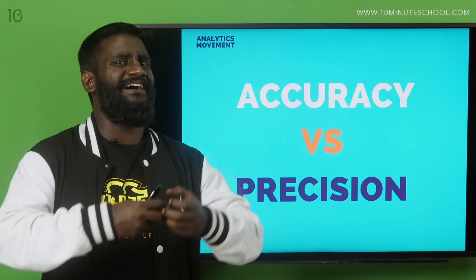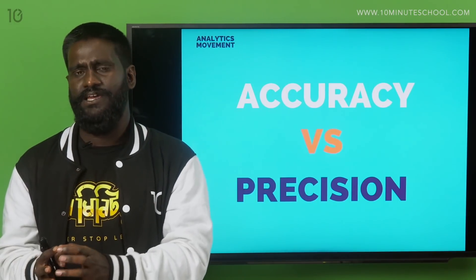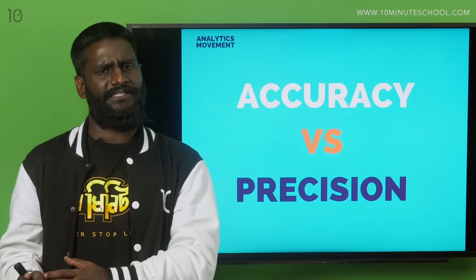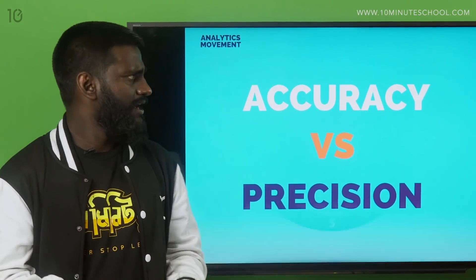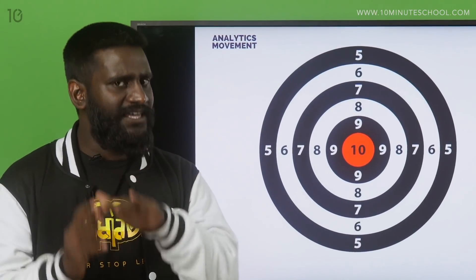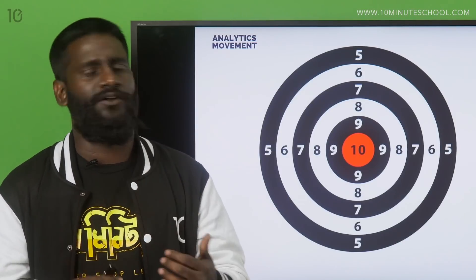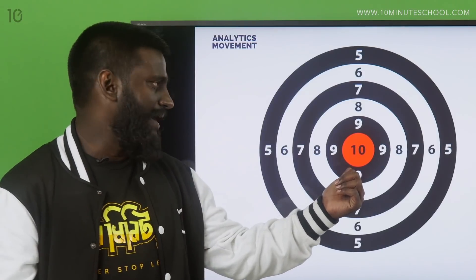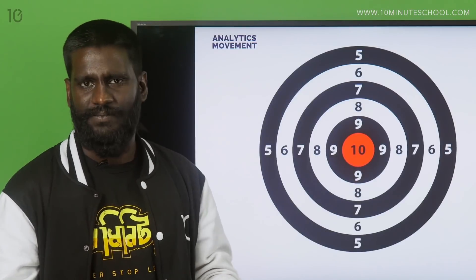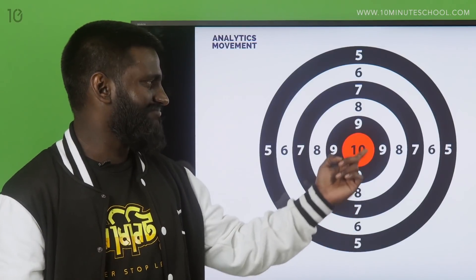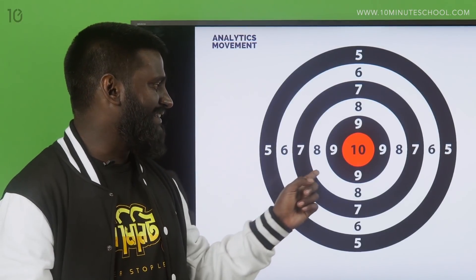The key is understanding whether you are trying to make your data very accurate or very precise. What is the difference between being accurate and being precise? Being accurate means being able to hit 10 all the time — right on the dot. But even on 10, you can be hitting here, here, here, different places — you're still on 10, but not the same spot.